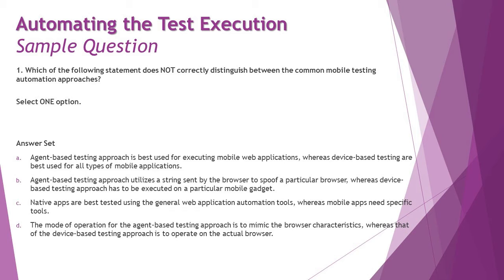These techniques are appropriately used according to the mobile web application and all sorts of applications. When it comes to agent-based testing, mobile web applications are a good candidate. When it comes to hybrid or native applications, you can make use of device-based testing, which is installed on the device. For web applications, agent-based works because you can use a browser with a URL. So option A is not the right answer.